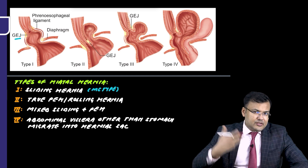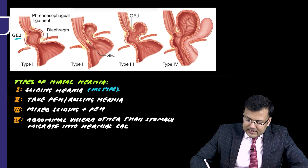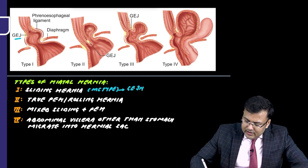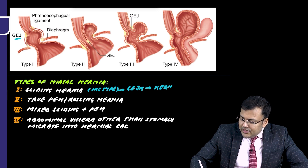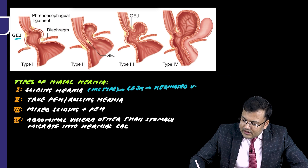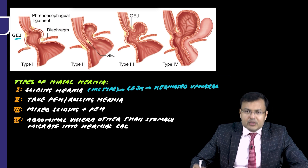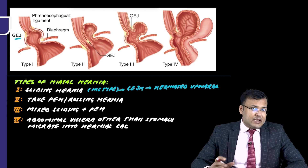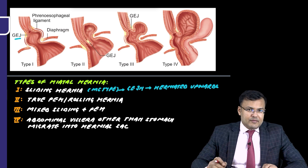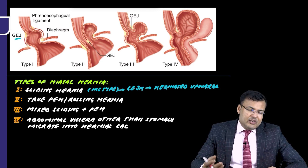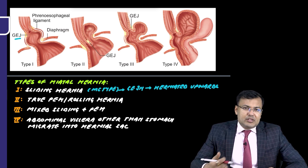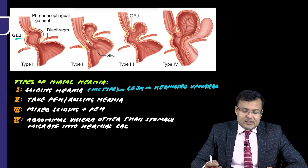In Type 1 sliding hernia, the GE junction is herniated upwards. Since the GE junction is herniated upwards, these patients will be having signs and symptoms of reflux. Either the patient is asymptomatic or the patient might be having symptoms of GERD.